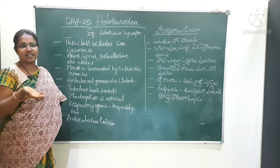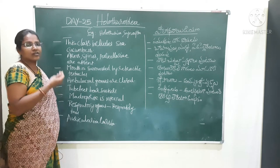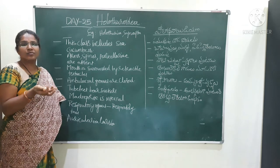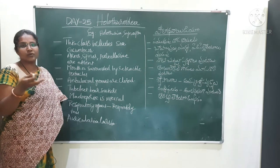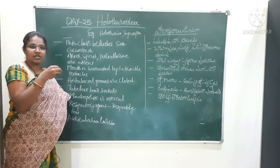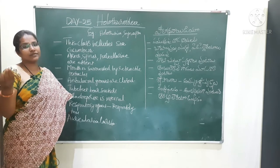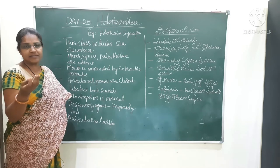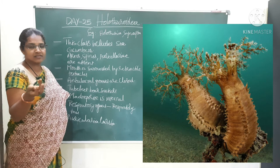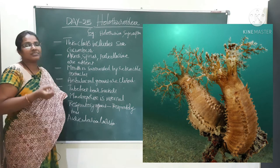The larvae is the auricularia larva. I will show the diagram for you. See, cucumbers — this is how they look. They look like a cucumber.